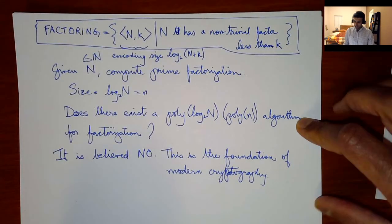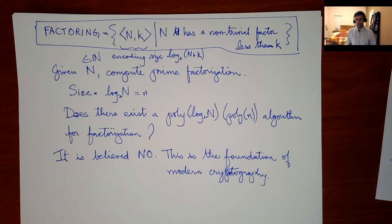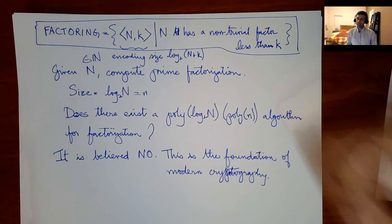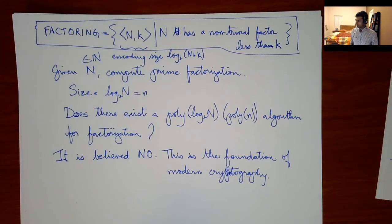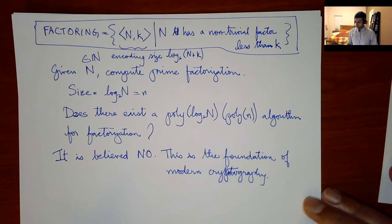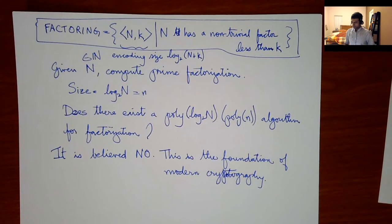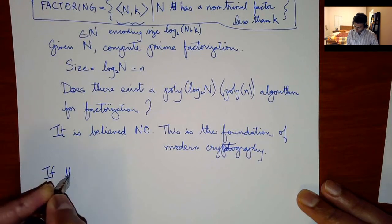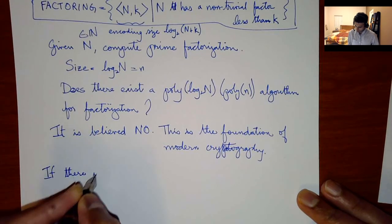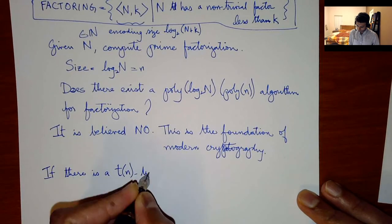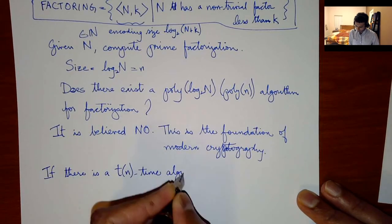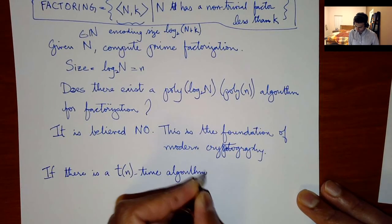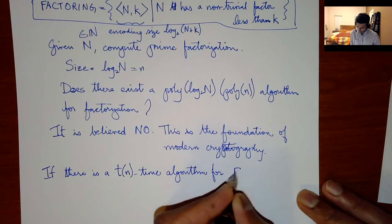Factoring is in NP — not too hard to see. The language is: N has a non-trivial factor less than K. The certificate is the factor itself, because division can be done in polynomial time. The certificate is representable in log₂(N) bits, and the certificate can be checked by division, which can be done in poly(log₂ N) time. So factoring is in NP.